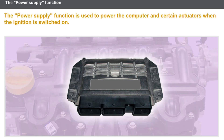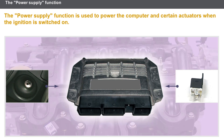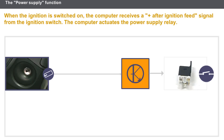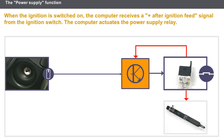The power supply function is used to power the computer and certain actuators when the ignition is switched on. This function uses the following components: the positive after ignition feed signal and the power supply relay. When the ignition is switched on, the computer receives a positive after ignition feed signal from the ignition switch. The computer then actuates the power supply relay, which powers the computer and various components.